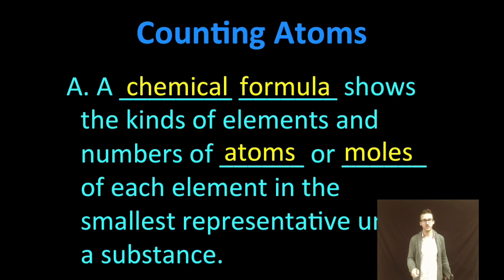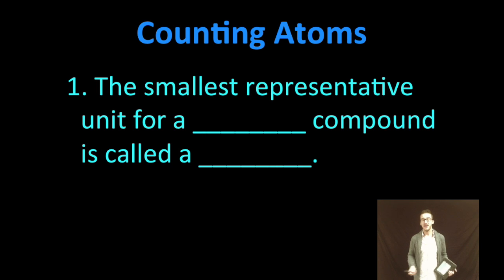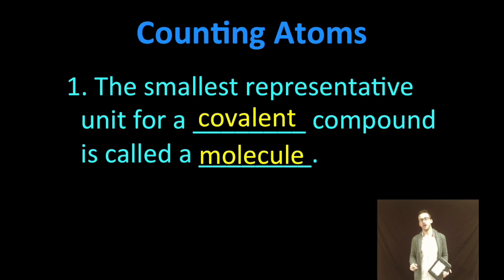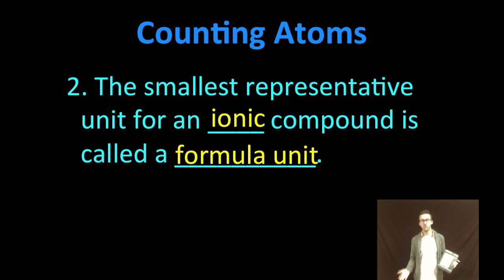numbers of moles of each element in the smallest representative unit of a substance. Now, when we're talking about covalent compounds, that smallest representative unit is called a molecule. But when we're talking about ionic compounds, that smallest representative unit is called a formula unit.